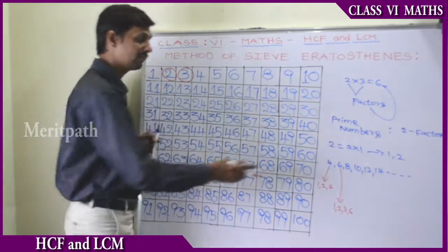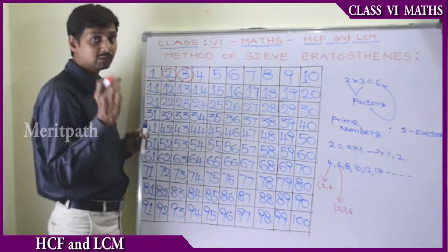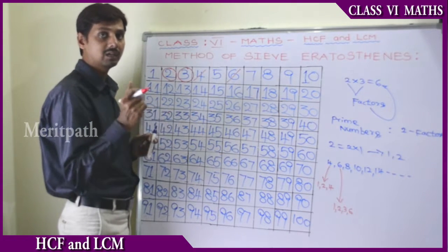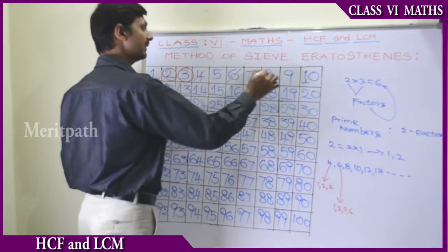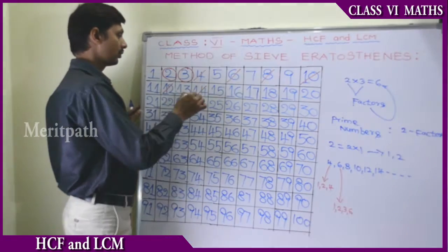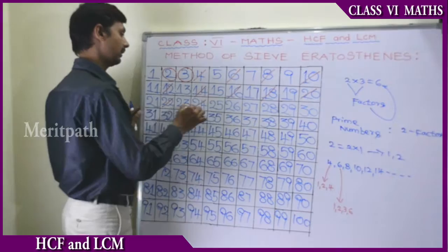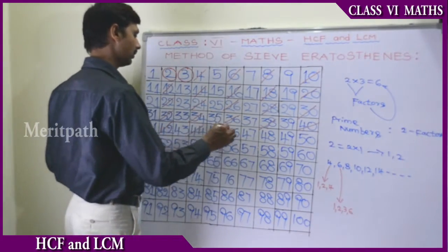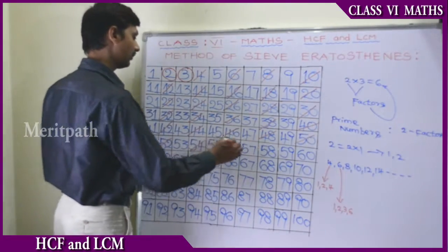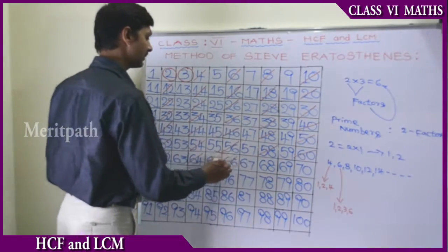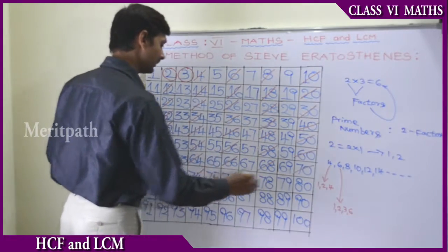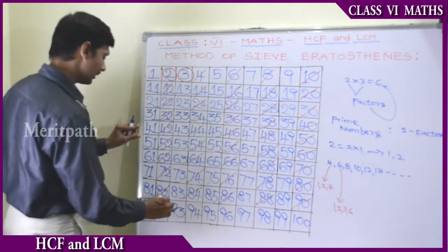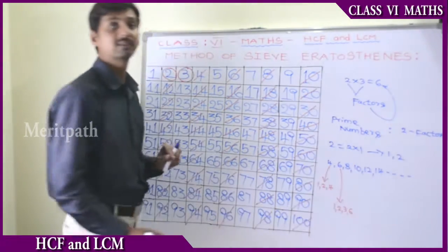So let's write the multiples of 2. The multiples of 2 are: 4, 6, 8, 10, 12, 14, 16, 18, 20, 22, 24, 26, 28, 30, 32, 34, 36, 38, 40, 42, 44, 46, 48, 52, 54, 56, 58, 60, 70, 72, 74, 76, 78, 80, 82, 84, 86, 88, 90, 92, 94, 96, 98, and 100 are the multiples of 2.